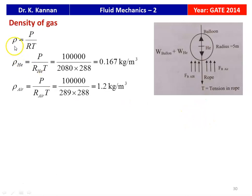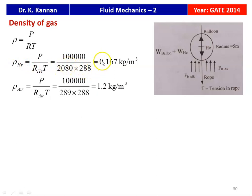The density of the gas: rho equals P divided by RT. We calculate the density of helium: 100 kilo Pascal, so 100,000 divided by 2080 times 288 (15 degree Celsius is 288 K), giving density of helium equal to 0.167 kg/m³. Density of air: 100,000 divided by 289 times 288 equals 1.2 kg/m³.